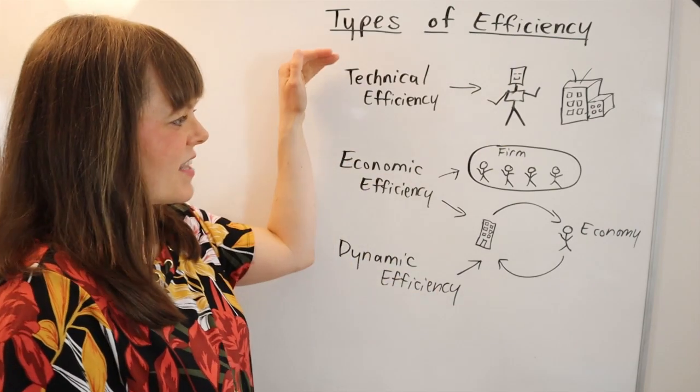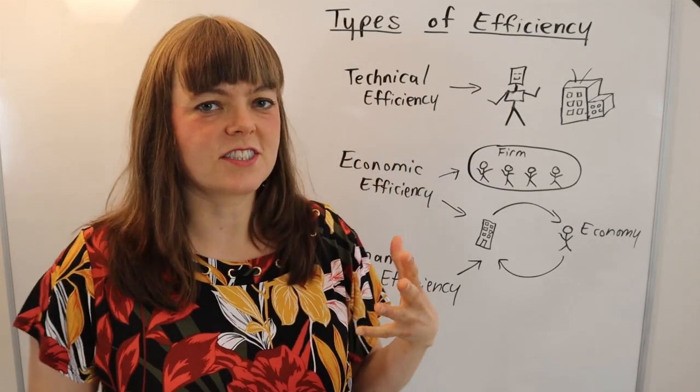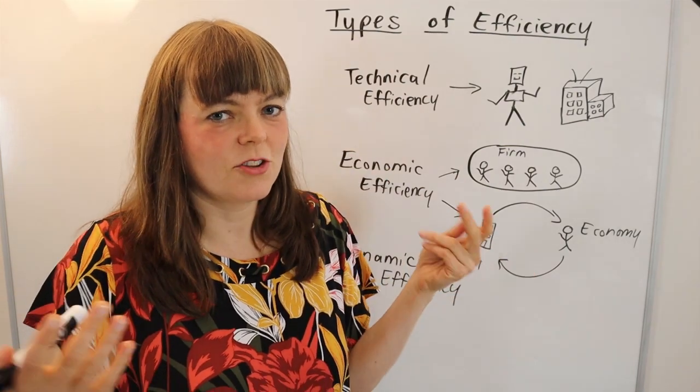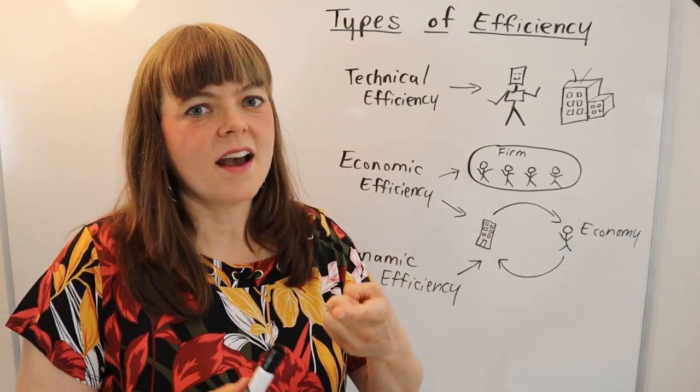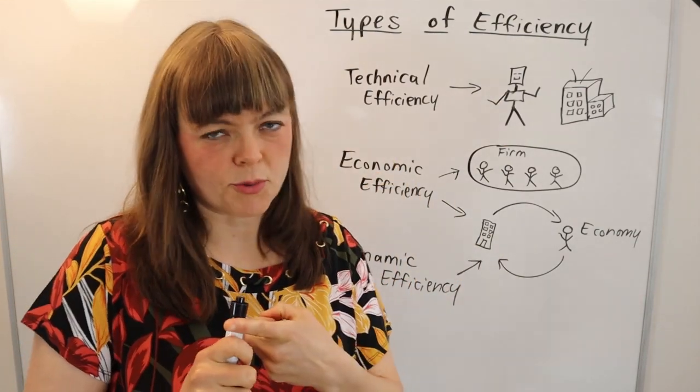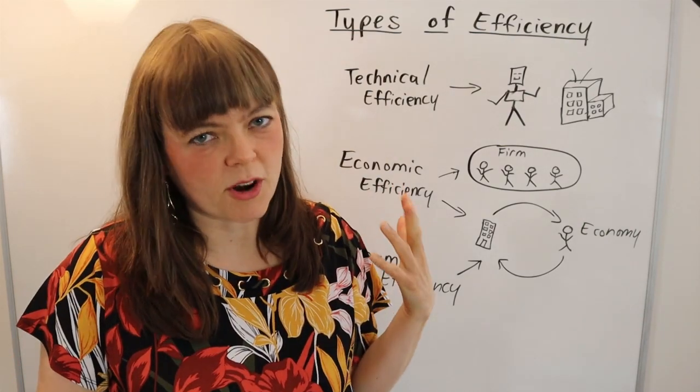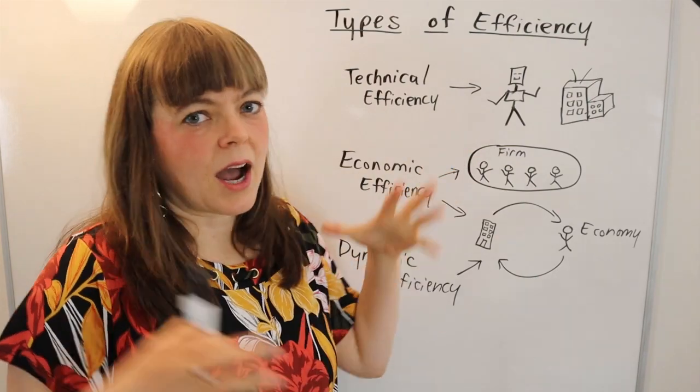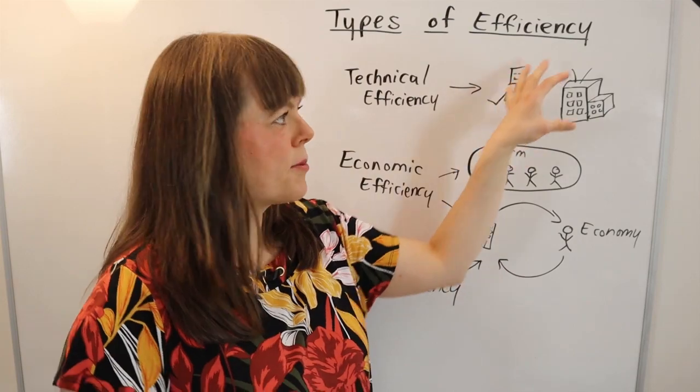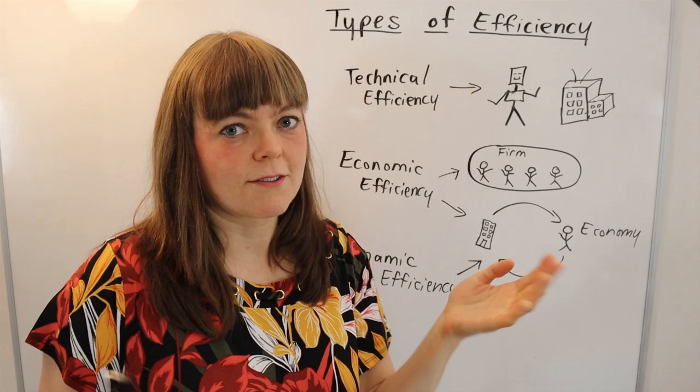And essentially, this gets harder and harder to measure as you go down the list, where technical efficiency is how efficient is, say, a machine at putting out products. So you can kind of easily say, if this is an assembly line that's entirely robots, how many products per hour does it put out? How many defective products per thousand products does it put out? How many resources go into making those products? So what is the cost per product of putting something out if this is entirely mechanized by robots, for example.